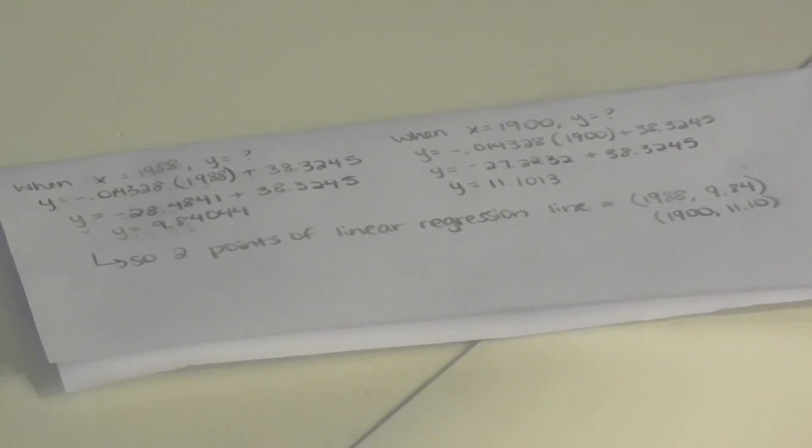In order for us to be able to draw this line by hand on our graph, we put in two x values that we knew, 1988 and 1900, and we plugged them each into the equation to find the corresponding y value. This way we can plot it on our graph using those two points.